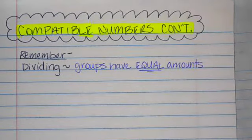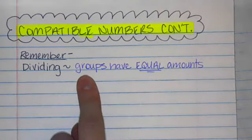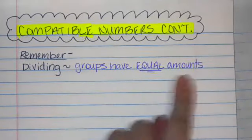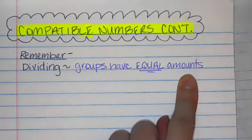That way we're double checking ourselves. Remember that when we are dividing, we make sure that our groups have equal amounts. It's only fair.